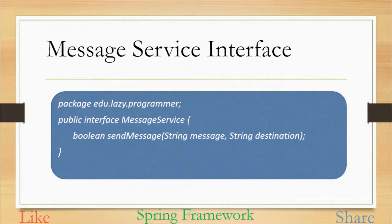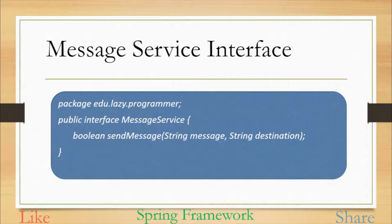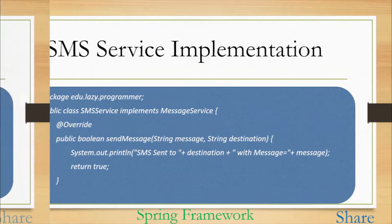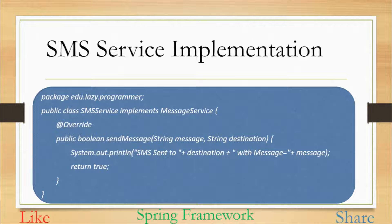Now let's see a complete example with all the components using dependency injection. Let's say we want to send an email message and an SMS to users. For dependency injection we need a base interface for these services. We have a MessageService interface with a single method declaration for sending a message, which accepts two parameters: the message and the destination. The first implementation is EmailService, which implements the MessageService interface and provides its own implementation. Similarly, we have SMSService, which also implements the MessageService interface and provides its own implementation for sending SMS messages.